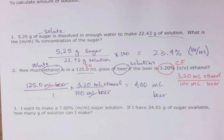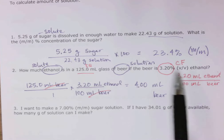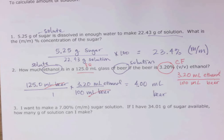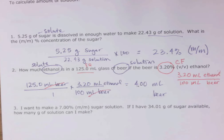One of the most challenging aspects of these problems is recognizing that any time you have a percent, you can make it into a conversion factor. For example, if a class is 25% male, that means out of 100 students, 25 are male and the remaining 75 are female.